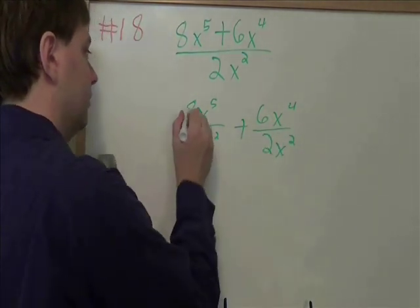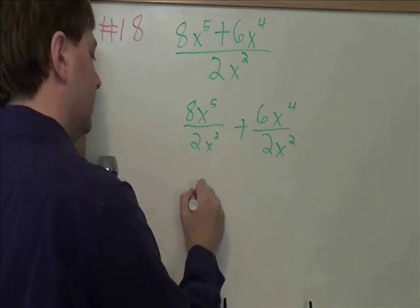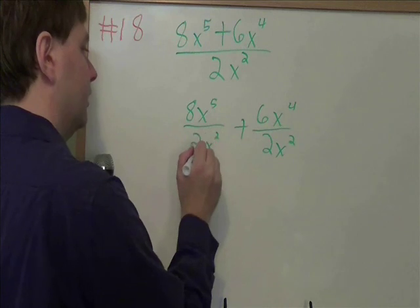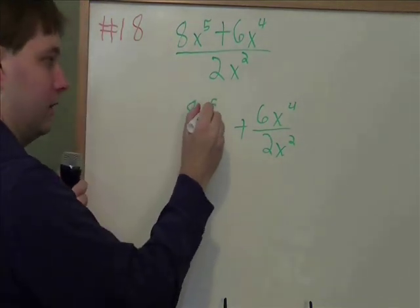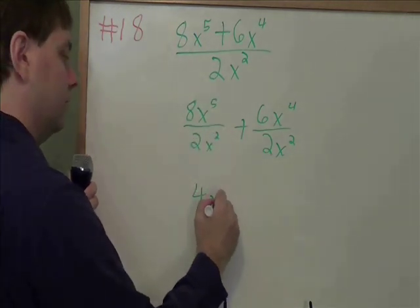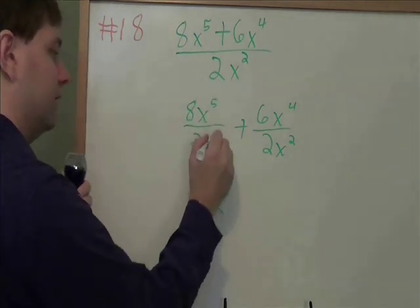And from there we can just divide. What is 8 divided by 2? That's 4. What is x to the fifth divided by x squared? Remember when we divide with exponents, we subtract them. If you have 5 x's and you divide out two of them, you're left with three of them. 5 minus 2 is 3.